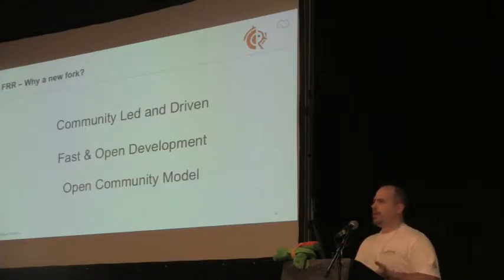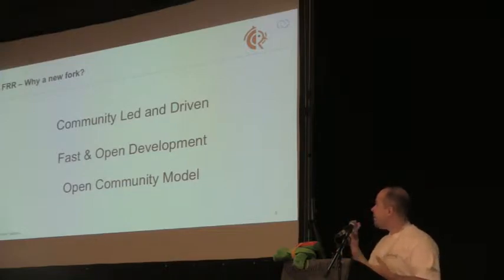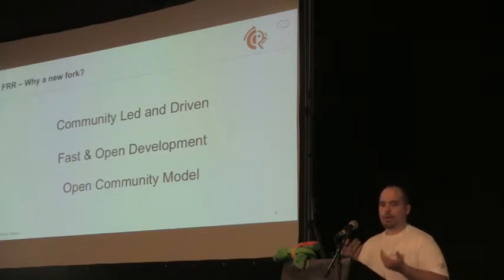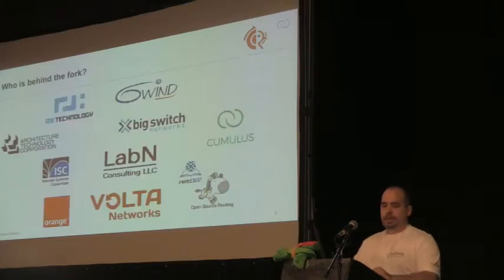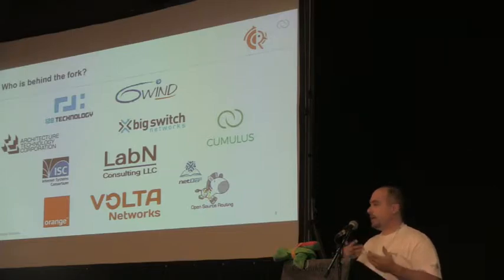Why did we fork this? A fork in open-source software is not the best thing to happen — you always try to prevent it. But what we wanted, and Cumulus is one of the contributors to FRR, is to have a more community-driven development and faster development as well. There are a lot of people and companies involved, and they all make contributions on several protocols.